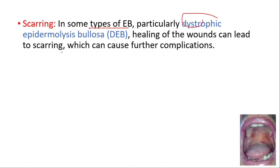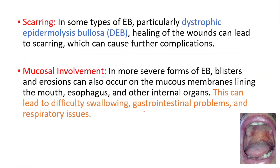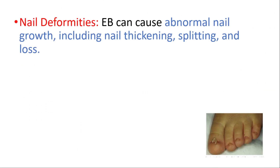These wounds can be slow to heal and may leave behind scars. In some types of epidermolysis bullosa, particularly the dystrophic subtype, healing of the wounds can lead to scarring which can cause further complications. In more severe forms, blisters and erosions can also occur on the mucous membranes lining the mouth, esophagus, and other internal organs, leading to difficulty swallowing, gastrointestinal problems, and respiratory issues.